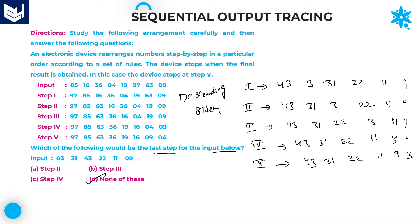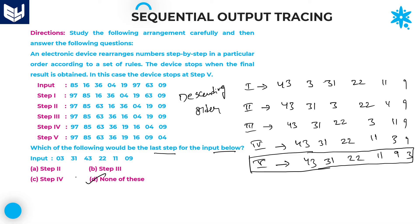Whenever 'none of these' is an option, you have to be very careful. Here, step 5 is the answer but it isn't listed. Most students get confused at step 4 — they stop after 3 or 4 steps and mark step 4 as the answer. But you must continue until you get the final result. The final step is step 5, so 'none of these' is the right answer.